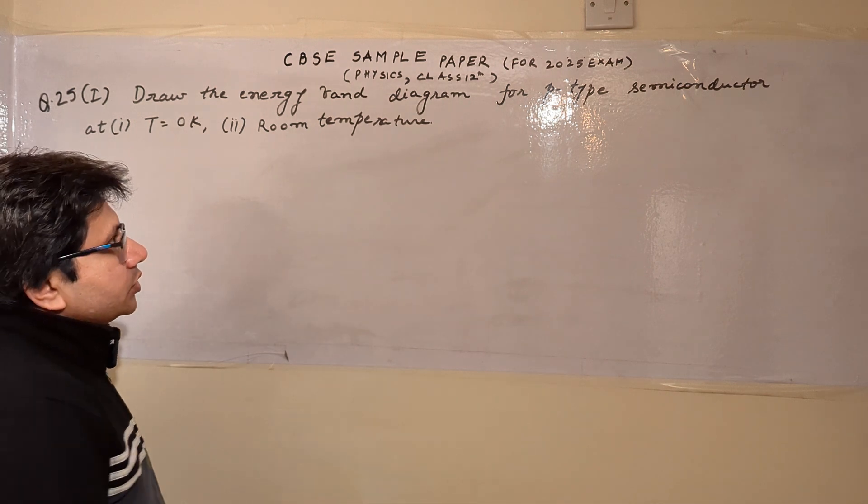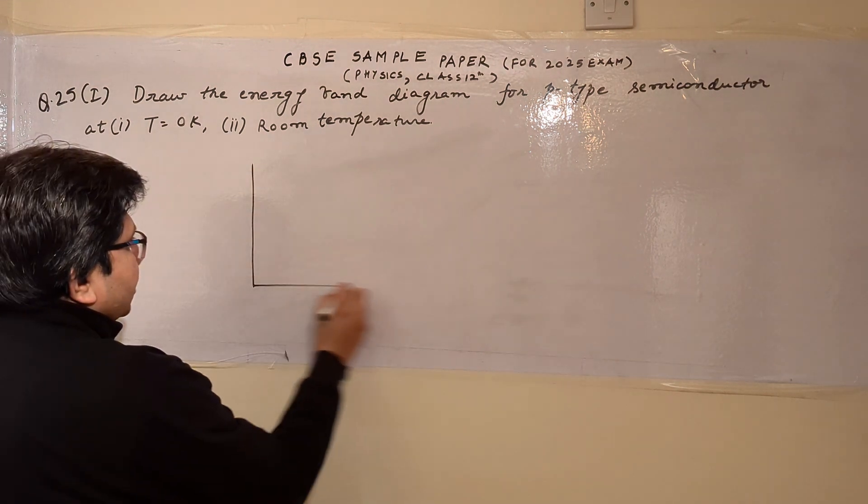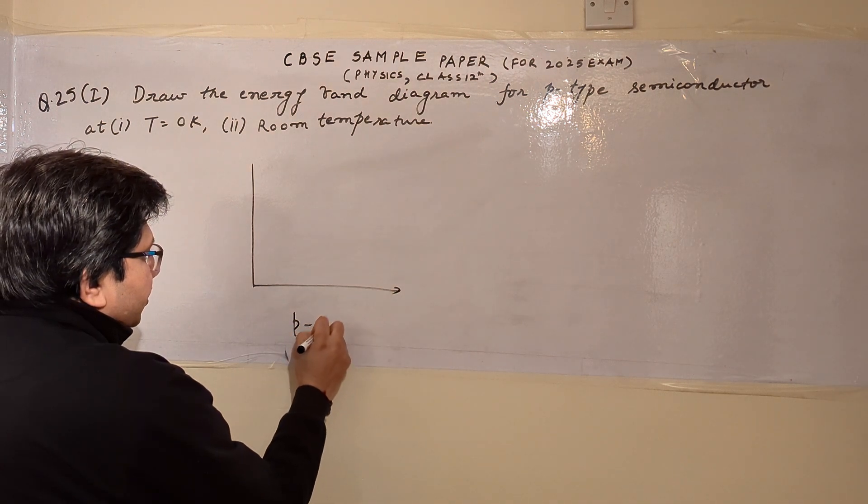So the problem is based on the topic of semiconductors and in particular the energy band diagram. We have to draw the energy band diagram for the P-type semiconductor.